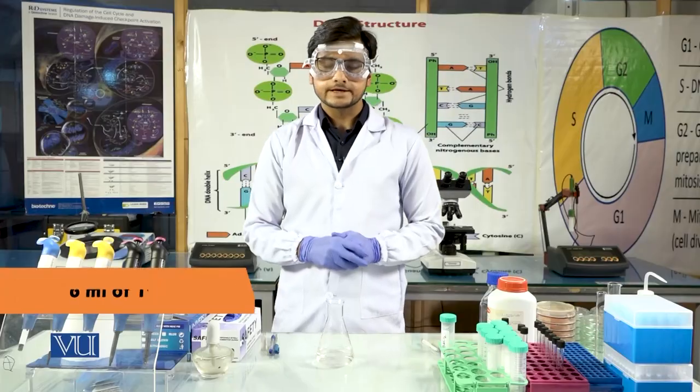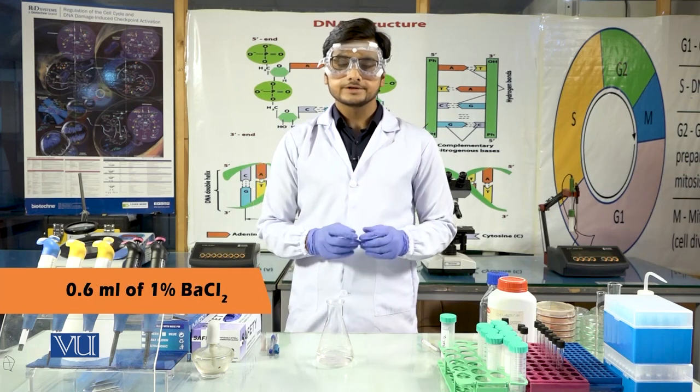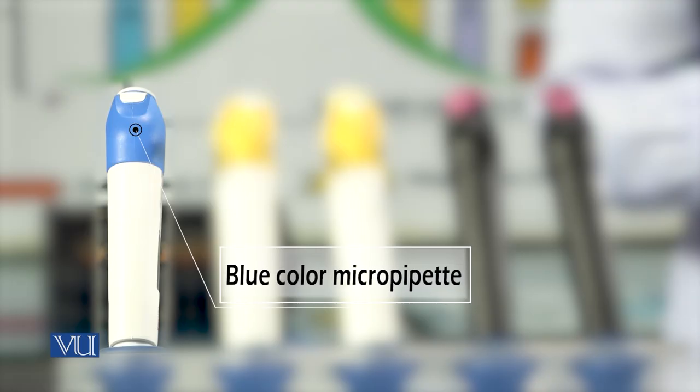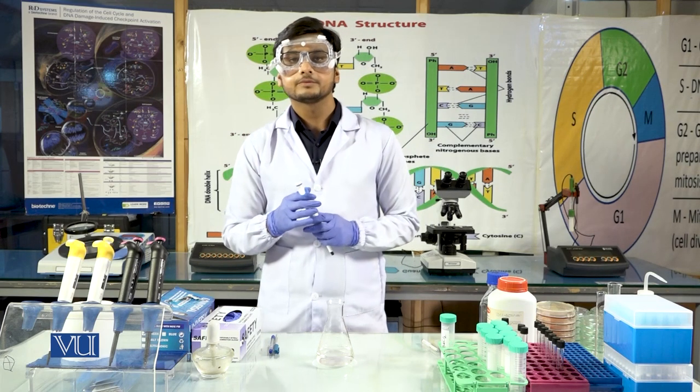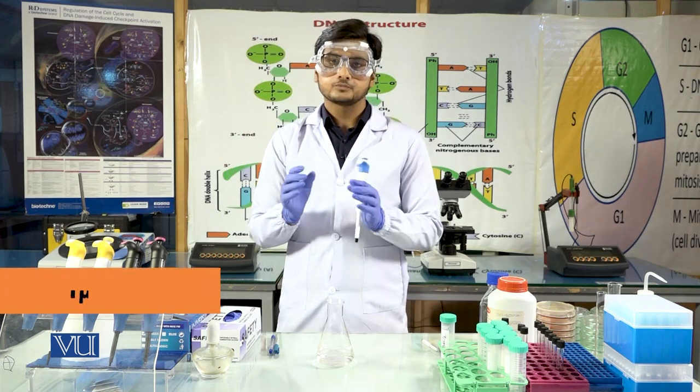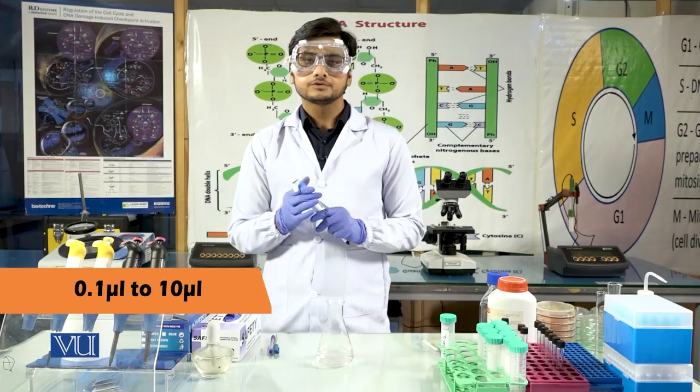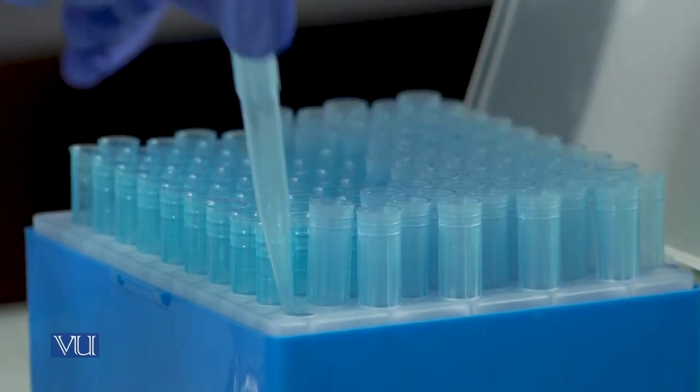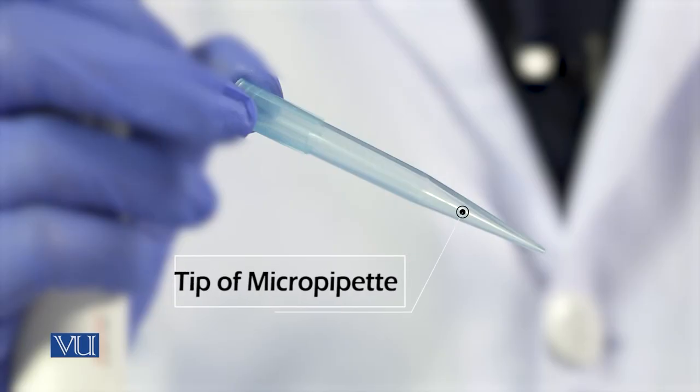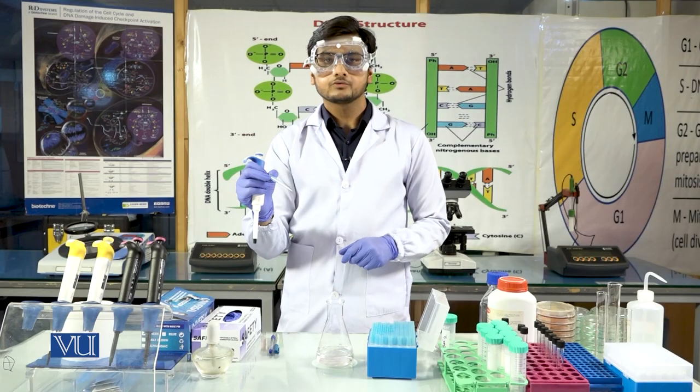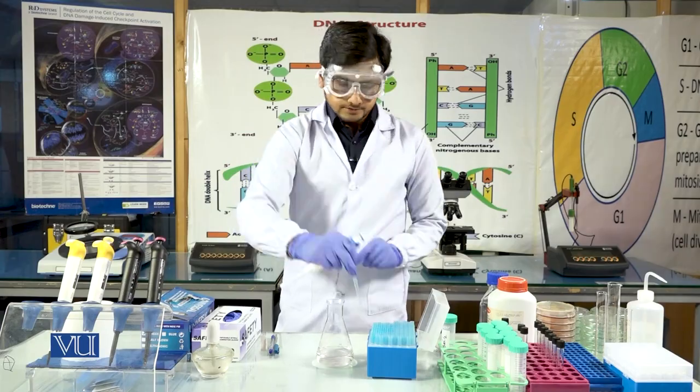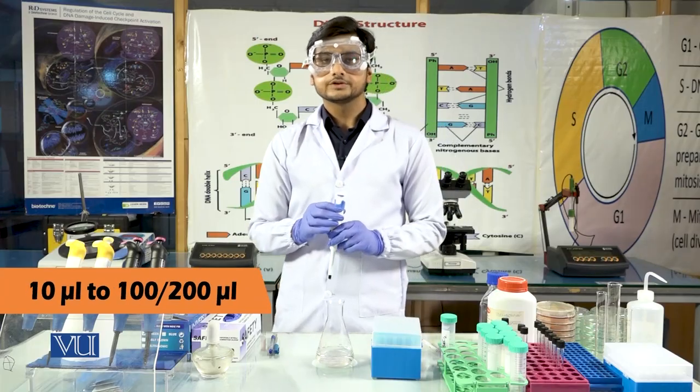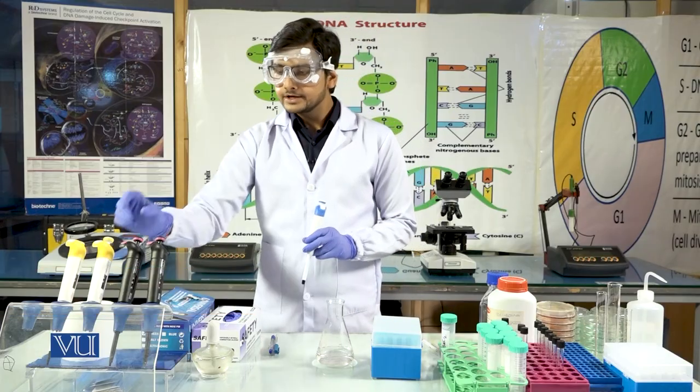Now we take 0.6 ml of 1% barium chloride solution. 0.6 ml means we require 600 microliters. For this purpose, we use blue color micropipettes. There are three types of micropipettes: number one is 0.1 microliter to 10 microliter, for which we use white tips. These are the tips. Number two range is from 10 microliter to 200 or 100 microliter, for which we require yellow color pipette.